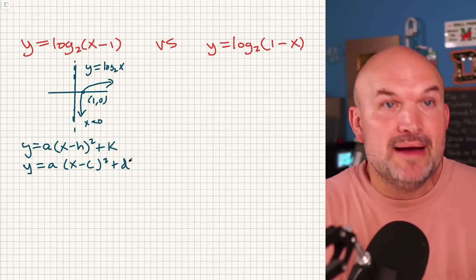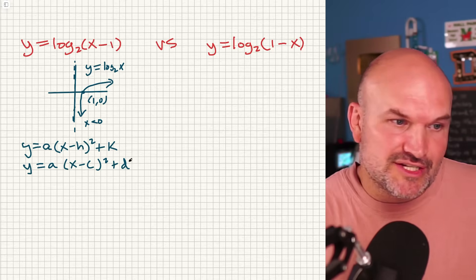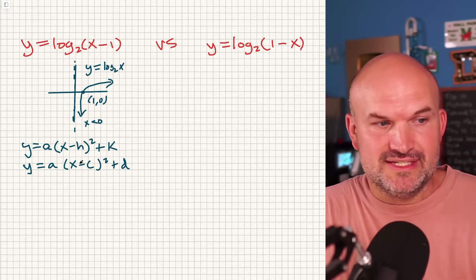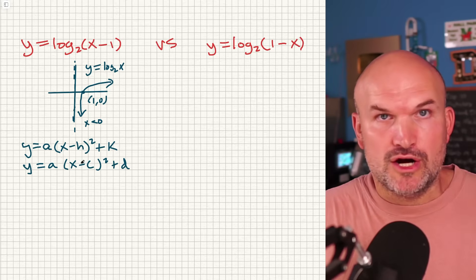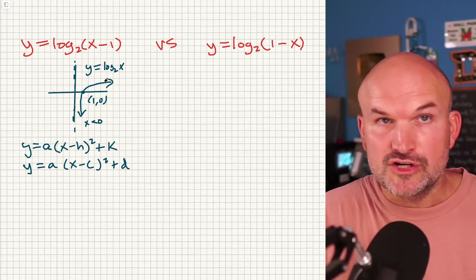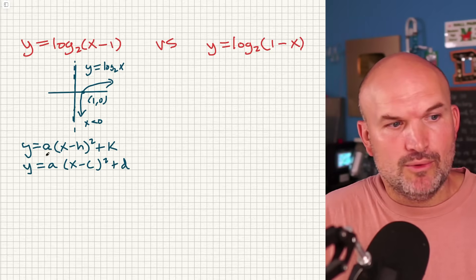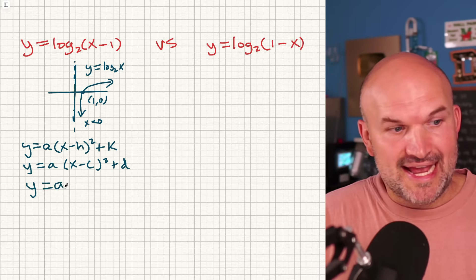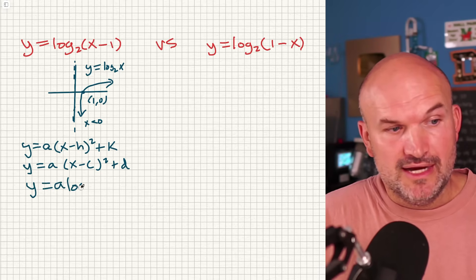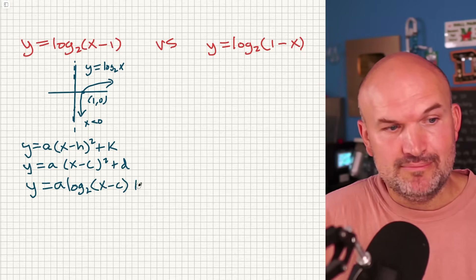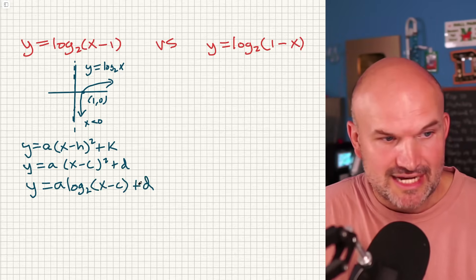Hopefully students remember the transformations because we spent a lot of time on them. The cool thing is the transformations for all functions are going to be the same. So for the parent function log base 2 of x, using a, c, and d, it looks like this: a is outside the function, then log base 2 of (x minus c) inside, and plus d on the outside.